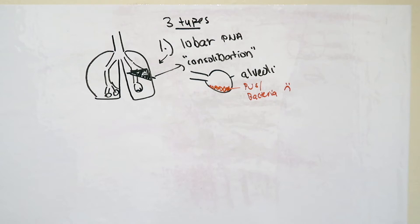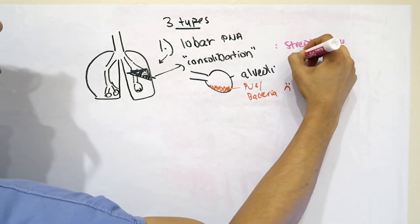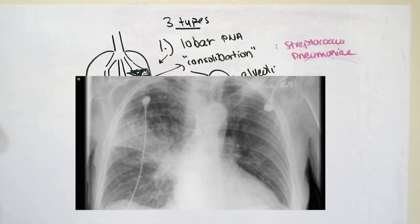Sounds kind of gross, right? The big and most common causative bacteria that causes this type of pneumonia is called streptococcus pneumonia. In fact, pneumonia is in the name. Here is an example of a lobar pneumonia on a chest x-ray. Notice how it is consolidating one lobe over the right side of the chest.